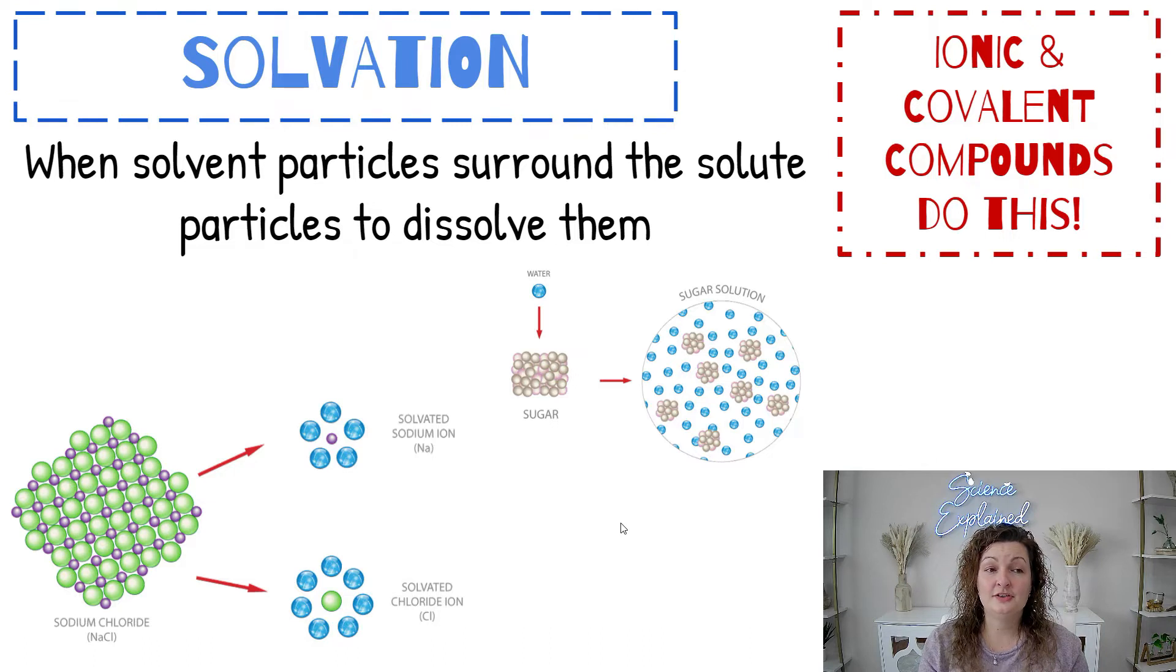Let's talk about solvation. Solvation occurs when the solvent particles surround the solute particles to dissolve them. This happens in ionic and covalent bonds. Here we have sodium chloride, which is salt. It's ionic. When it dissolves, it breaks into sodium and chlorine, and the solvent will surround it to dissolve it. If we look at sugar, sugar is covalent. When sugar breaks apart, it will not break into individual atoms the way an ionic bond will. It stays as a whole cluster of a sugar molecule, and the water molecules surround it. Our solvent is fully surrounding each molecule of that sugar.